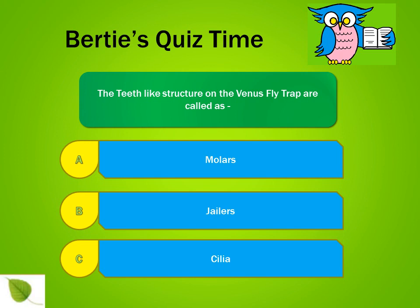One last question. The teeth-like structure on the Venus flytrap are called as dash. A: Molars. B: Jailers. C: Cilia. The correct answer is C — cilia.